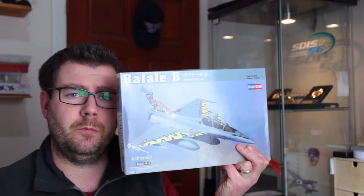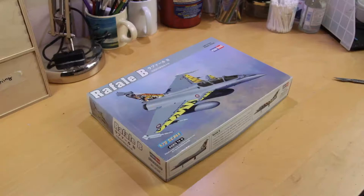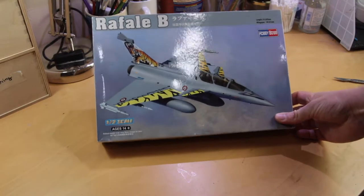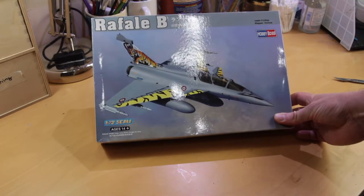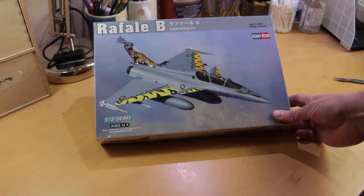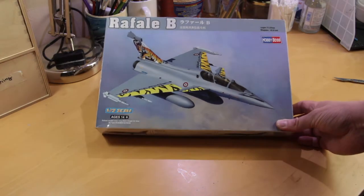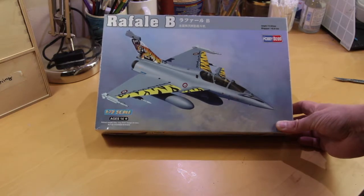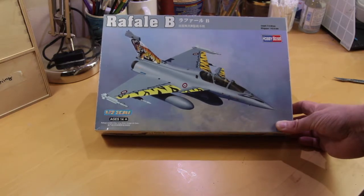So the kit we're looking at is the Hobby Boss Rafale B. It's a 1:72 scale kit. We'll get the cameras moved around looking down at the bench. Here we are - the Hobby Boss Rafale B in 1:72 scale with some nice box art showing tiger meet markings. This is the two seater Rafale.